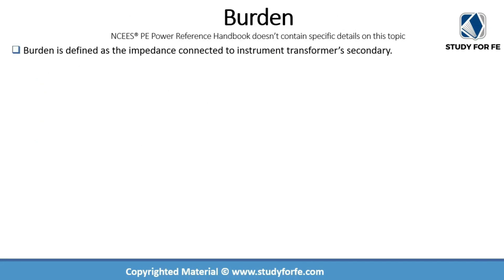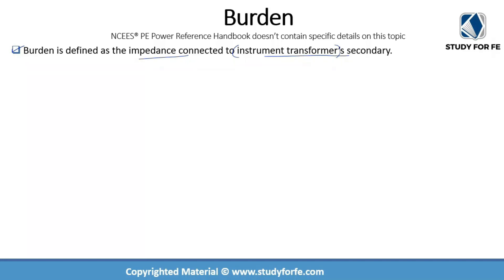So what is burden? Burden of an instrument transformer is defined as the impedance which is connected to the instrument transformer's secondary. I'm using the general term instrument transformer because burden is applicable to both current transformers as well as voltage transformers. Burden includes the transformer's own secondary impedance and that of the devices and connecting leads — everything connected on the transformer's secondary. IEEE expresses burden in terms of ohms, whereas IEC expresses burden in volt-amperes.